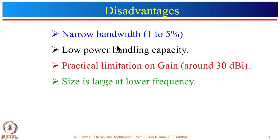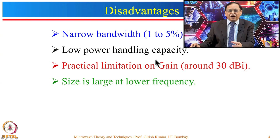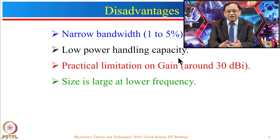However, microstrip antennas have a few disadvantages. One of the main disadvantages is narrow bandwidth — typical bandwidth is of the order of 1 to 5 percent. I will show techniques to increase the bandwidth. It also has typically low power handling capacity since it is fabricated on a PCB, though I will show one example that can handle very high power.